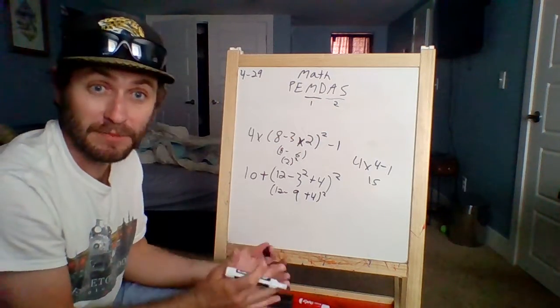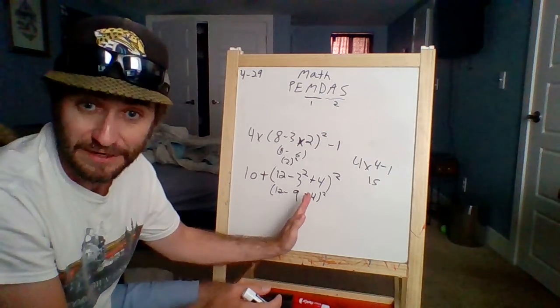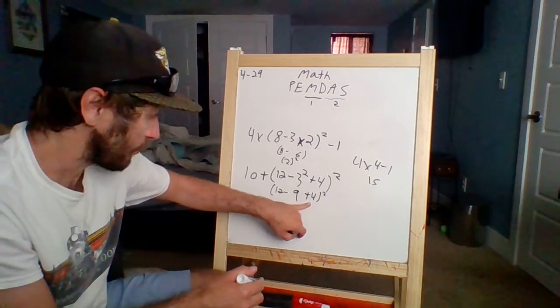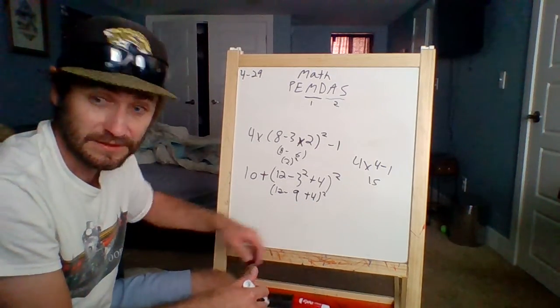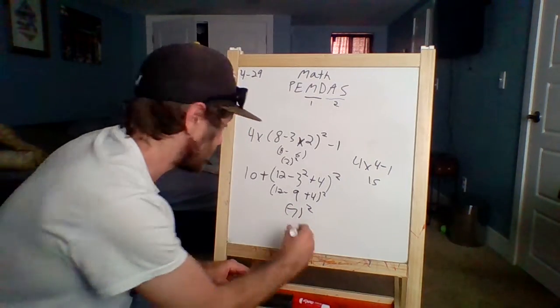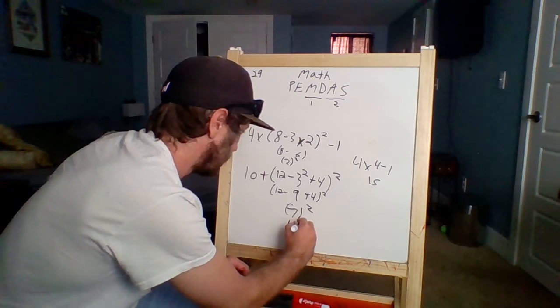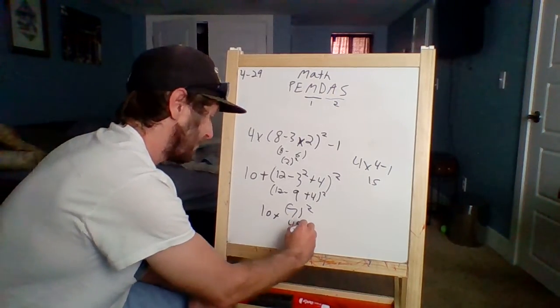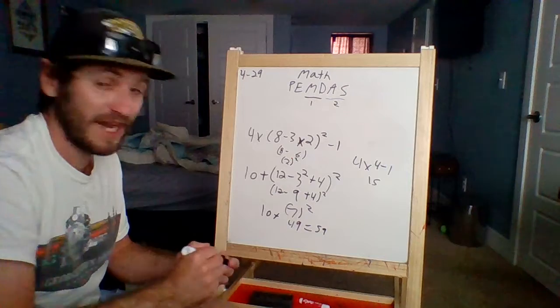Remember, addition and subtraction are on the same level. So I can just do it left to right. All right, so 12 minus nine is three. Three plus four is seven. Seven squared is 49. 10 plus 49 equals 59.